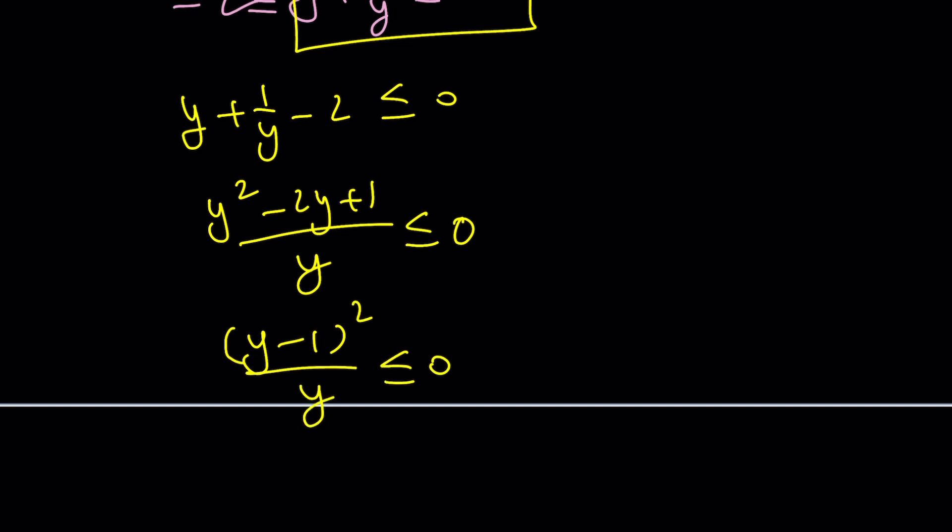Now, notice that this is Y minus one quantity squared divided by Y less than or equal to zero. Uh-oh. If Y is positive, think about it. If Y is positive, then Y minus one squared needs to be less than or equal to zero. I got stuck. Sorry about that. Brain fry. So, what does that mean? Well, perfect square cannot be negative, but it can be zero. Yay! This means Y equals one.